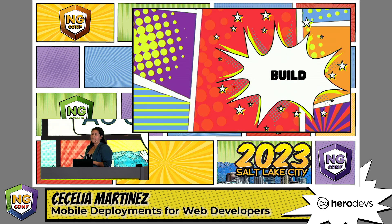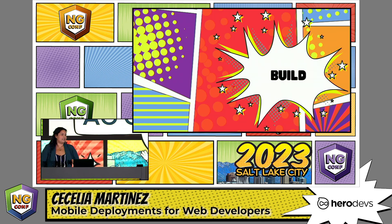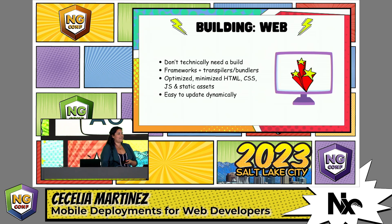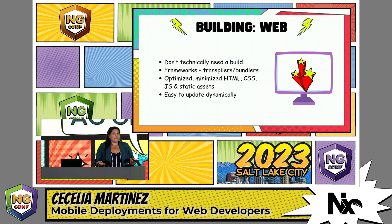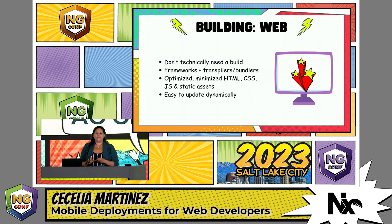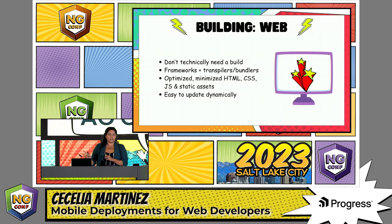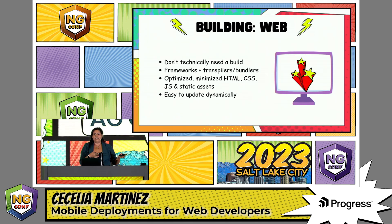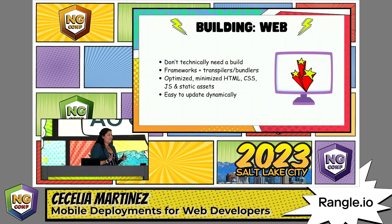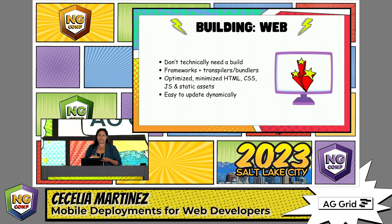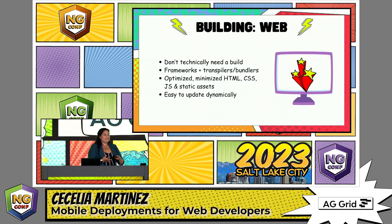You do have to build the native binary in order to test it, so let's talk about the build process. On the web side, you don't actually technically need a build — you could write HTML, CSS, and JavaScript and put those files on a server. But we use frameworks, transpilers, and bundlers to create an optimized production build. Typically this is built in with something like npm run build, which takes all dependencies and creates that optimized output. Because the build step is typically pretty quick, we're able to create new builds easily and update dynamically.